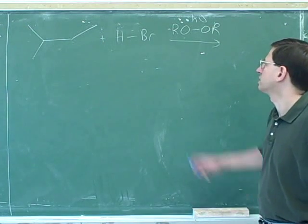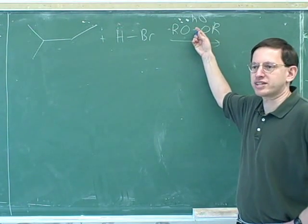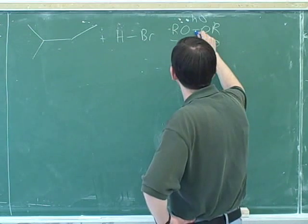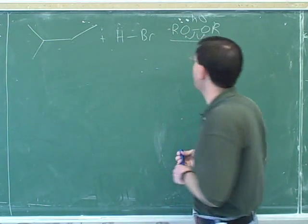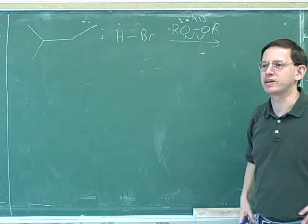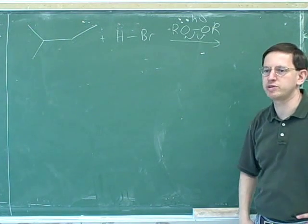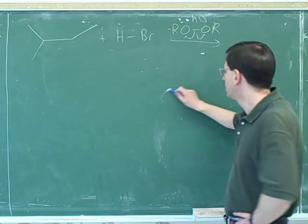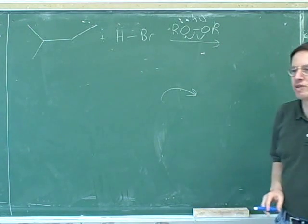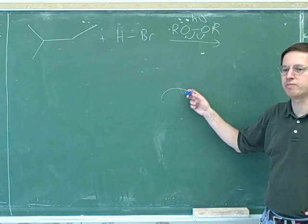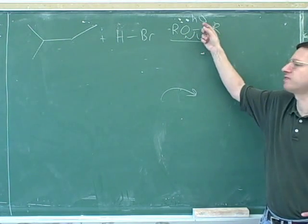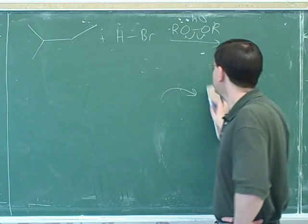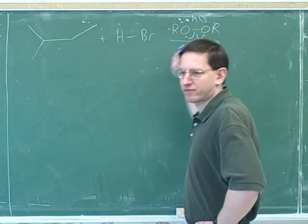A single bond gets broken. So it turns out that we're going to start here by breaking up this peroxide. And now it's very important that we're going back to using single-headed arrows because this is a radical mechanism.